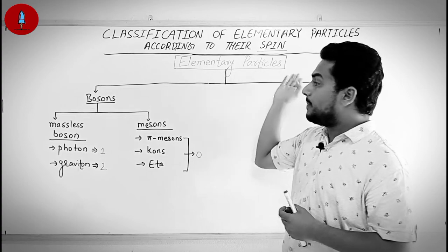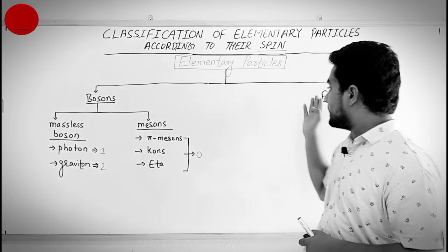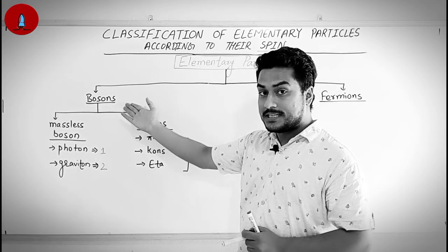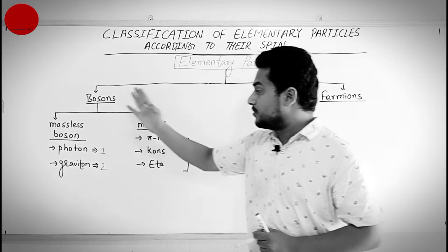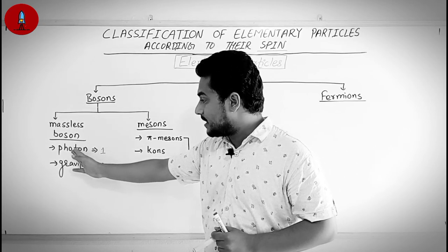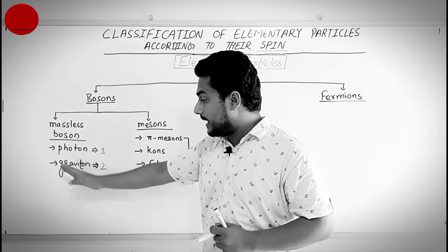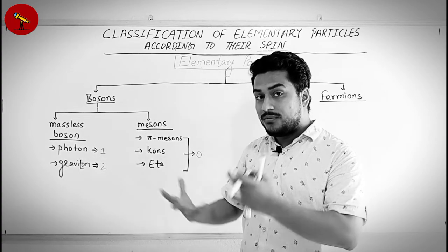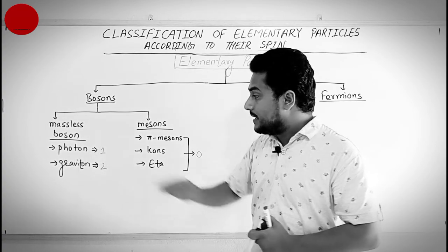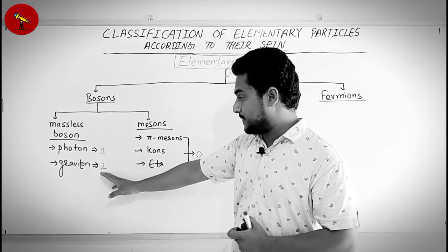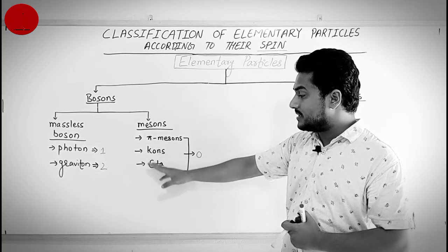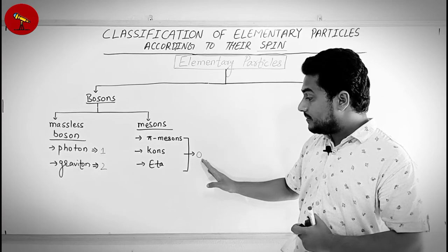Let us summarize this again. Elementary particles can be classified into two groups: bosons and fermions. Bosons are subatomic particles with integral spin. Massless bosons and mesons are the two categories of bosons. Massless bosons consist of the photon and graviton. The photon is the force carrier of the electromagnetic force, and the graviton is assumed to be the force carrier of gravity — they have spins of 1 and 2 respectively. The three popular mesons — pi mesons, kaons, and eta — all have spin 0.